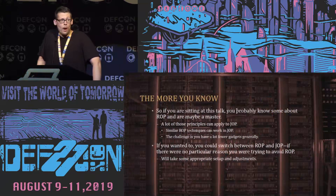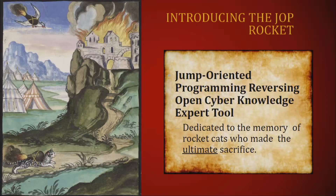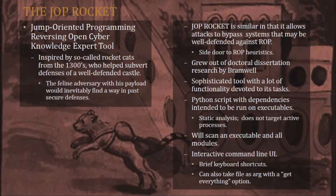A lot of ROP knowledge carries over to JOP, which is good news. To introduce the JOP Rocket — honoring the sacrifice that ancient rocket cats made centuries ago — in the 1300s, so-called rocket cats had explosives strapped to their backs to subvert the defenses of well-defended castles to deliver their payload. The JOP Rocket tries to do the same: get past ROP heuristics.